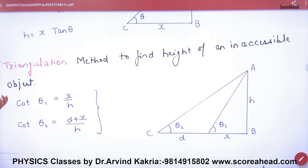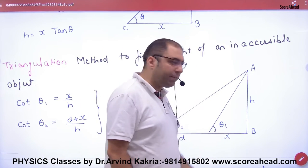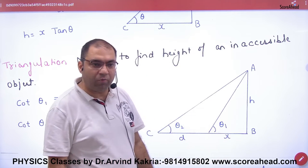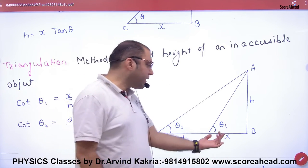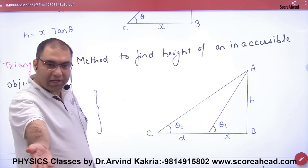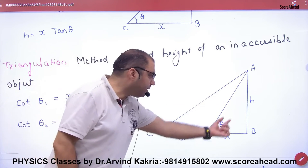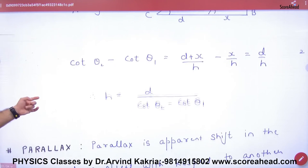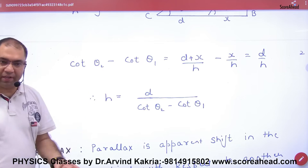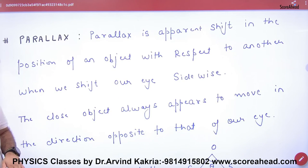To find the height of an object that you cannot physically reach — for example, if there is water in the way — you measure the ground distance d from your position to the base. You take the angle of elevation theta 1 from one point and theta 2 from another point. Using cot theta 1 and cot theta 2 with the known distance d, the height h can be simultaneously solved and calculated.